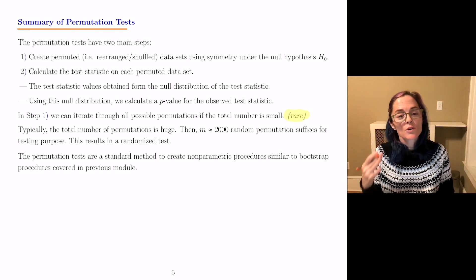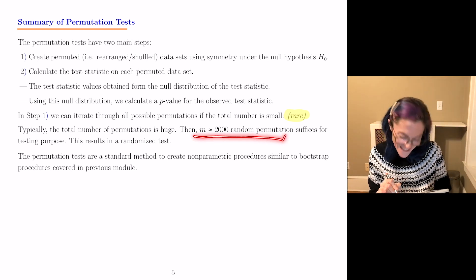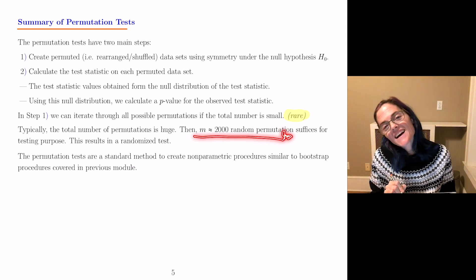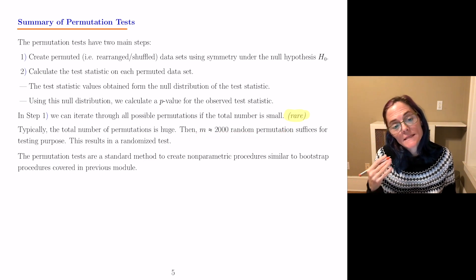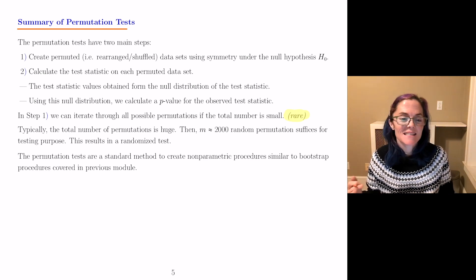So, typically, the total number of permutations is huge. And so, you could select 2,000 random permutations. That would suffice for testing purposes. This would result in a randomized test.